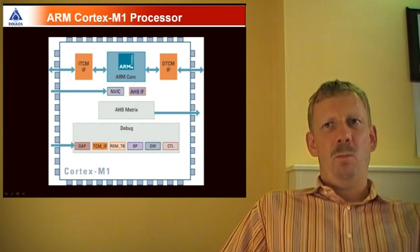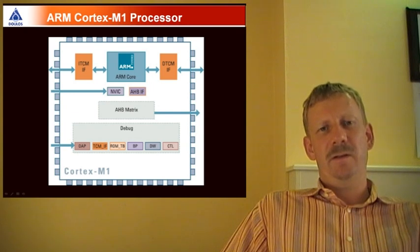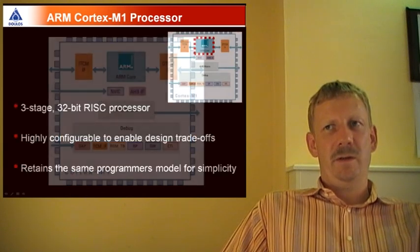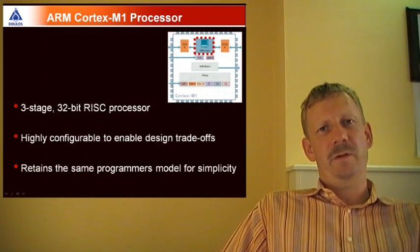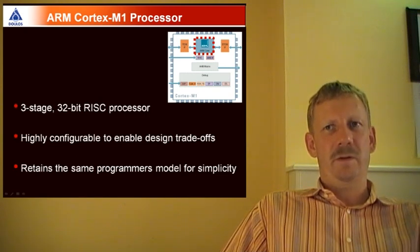The Cortex-M1 processor is a small, explicitly designed version of the ARM architecture for the FPGA market. The Cortex-M1 processor is a three-stage pipeline, as we are used to with ARM, a 32-bit RISC processor architecture.